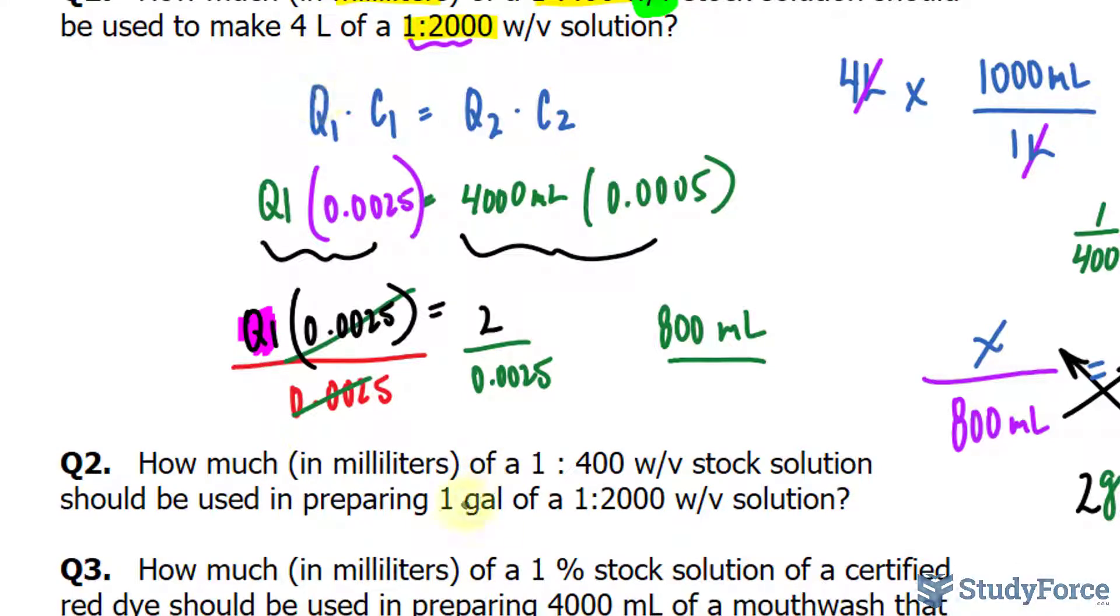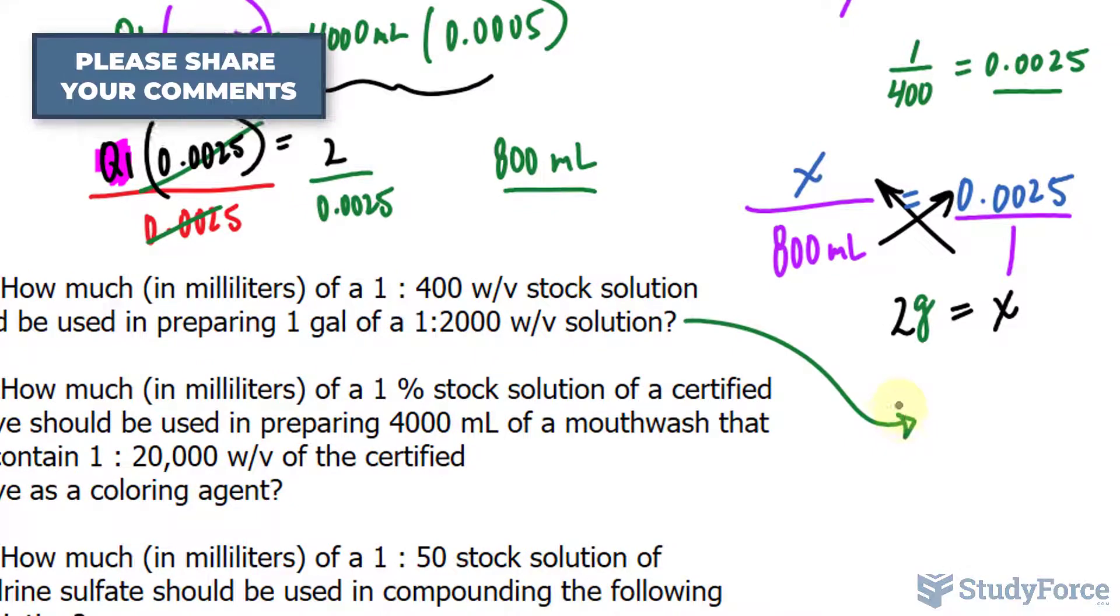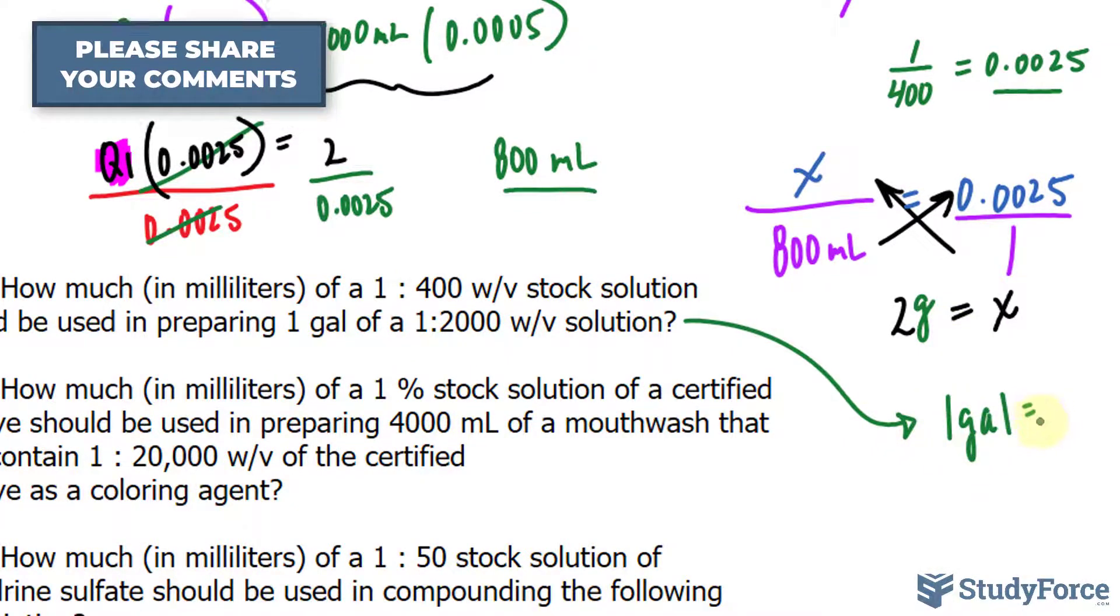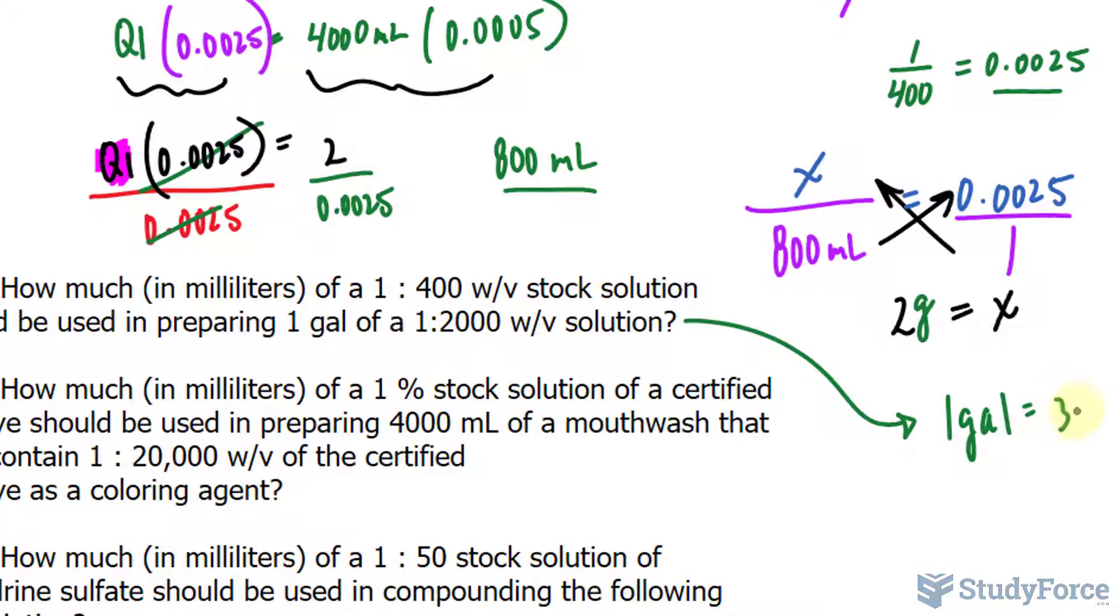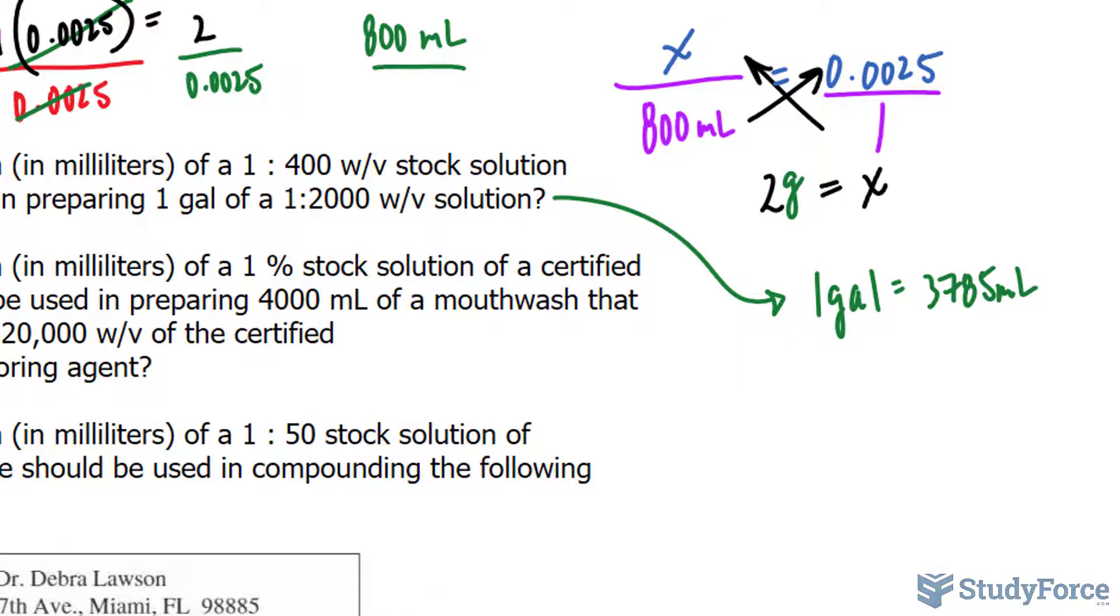So you need to know the conversion from gallons to milliliters in order to do this question, but the rest is the same. So the conversion is that one gallon is equal to roughly 3,785 milliliters. So rather than using one gallon, use 3,785 instead.